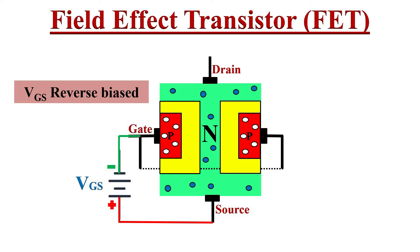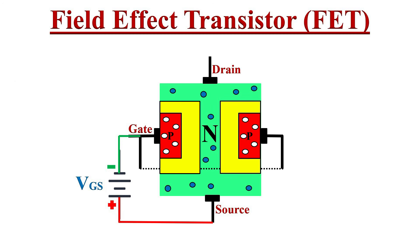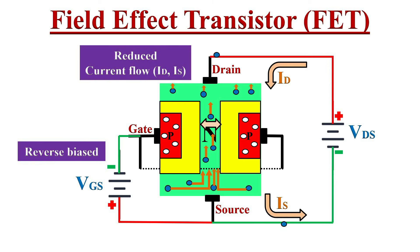Because of this increased depletion region, the N-channel width will reduce. If we keep on increasing the reverse voltage VGS, the depletion region keeps on increasing and at one particular reverse voltage the channel will get closed. If we decrease this reverse voltage VGS, the depletion region decreases. When a positive voltage VDS is applied, electrons flow from source to drain, but now the channel width is reduced, so the electrons have to flow through this narrow gap of the channel. Hence the reverse bias between gate and source terminal will reduce the flow of current ID and IS.